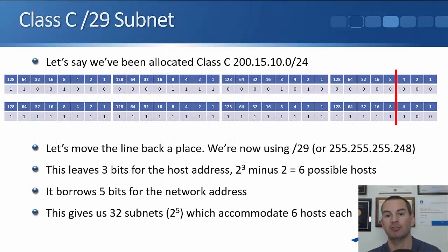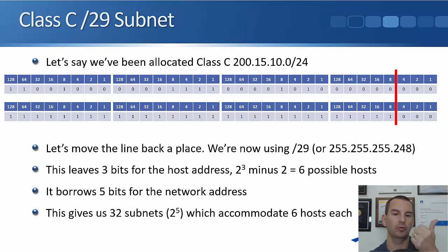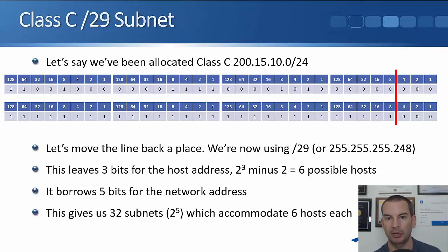Next up is a slash 29 — we're going to move the line back a space again. A slash 29 in dotted decimal is 255.255.255.248. We get the 248 because it's 128 plus 64 plus 32 plus 16 plus 8. That leaves three bits for the host address. 2 to the power of 3 is 8; minus 2 for the network and broadcast addresses gives us six available host addresses. Class C's default subnet mask is /24; here we're using a slash 29, so we're borrowing five bits for the network address.